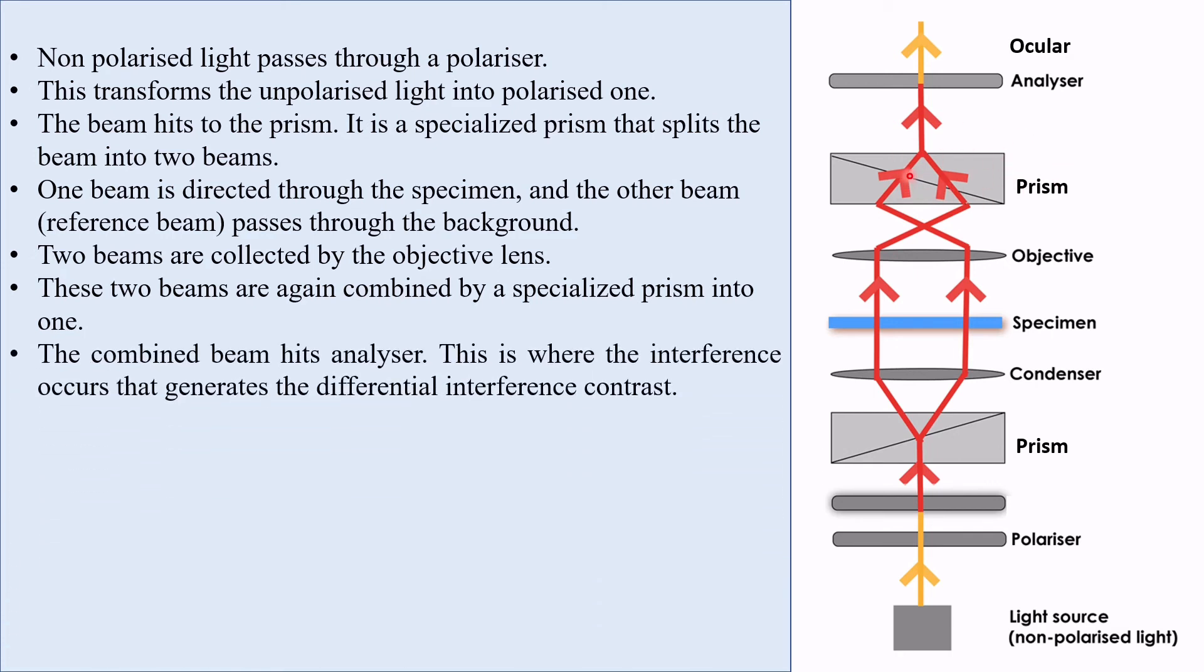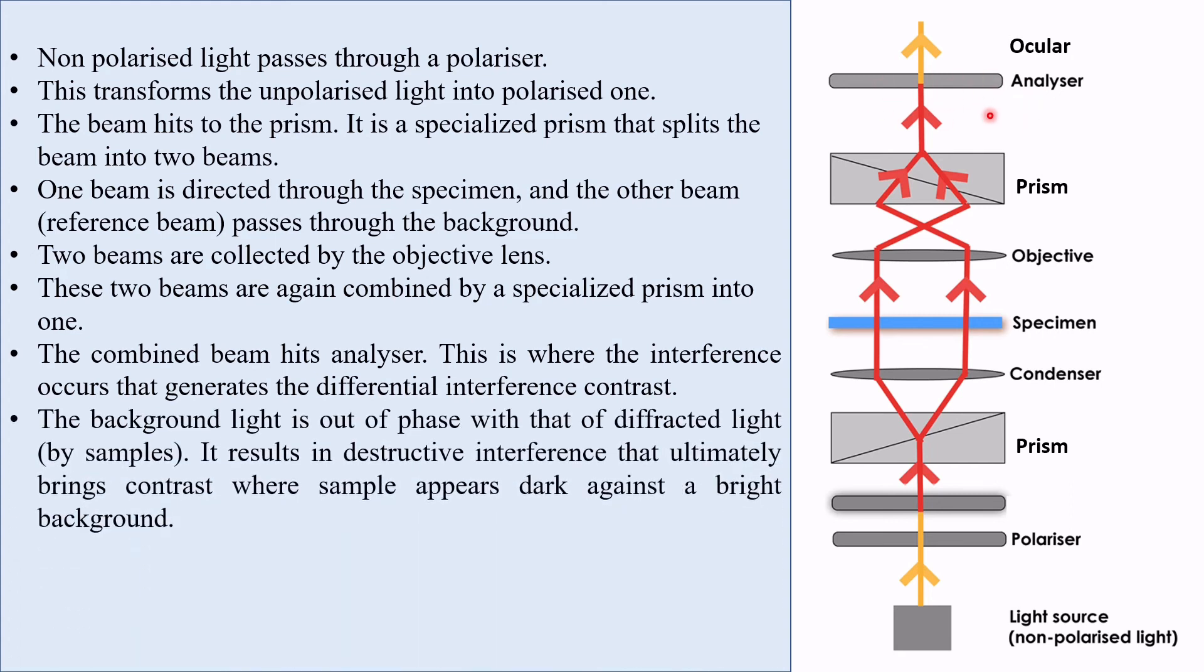The combined beam hits analyzer. This is where the interference occurs that generates the differential interference contrast. The background light is out of phase with that of diffracted light by samples. It results in destructive interference that ultimately brings contrast where sample appears dark against a bright background.